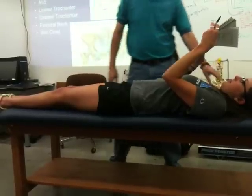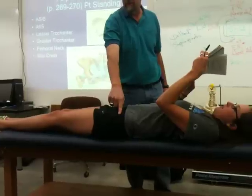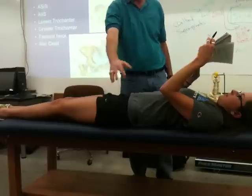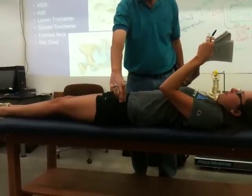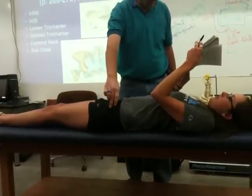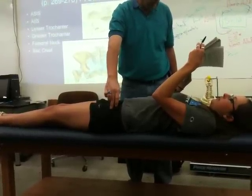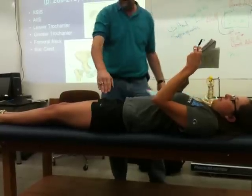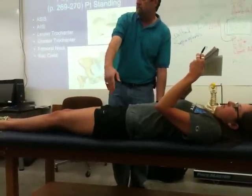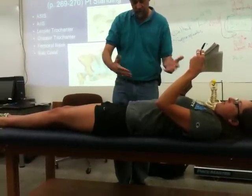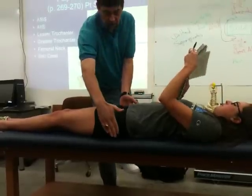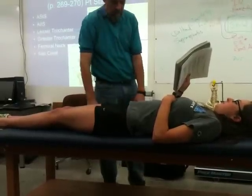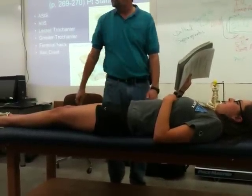On those landmarks, we're looking for the ASIS — sartorius injuries, either tendonitis or avulsion fractures. The inferior one — we're looking at the rectus femoris. For the lesser trochanter we're looking at iliopsoas problems or avulsions or tendonitis. Here we're looking for IT band syndrome, the snapping hip syndrome. And the femoral neck — we're looking for fractures.